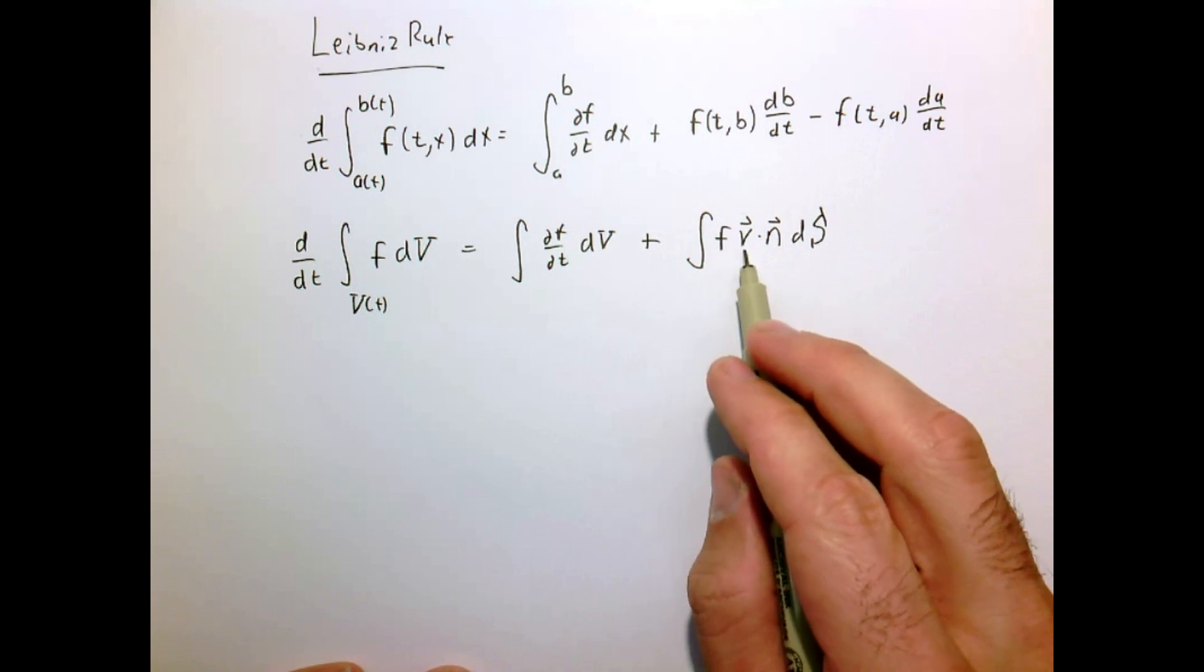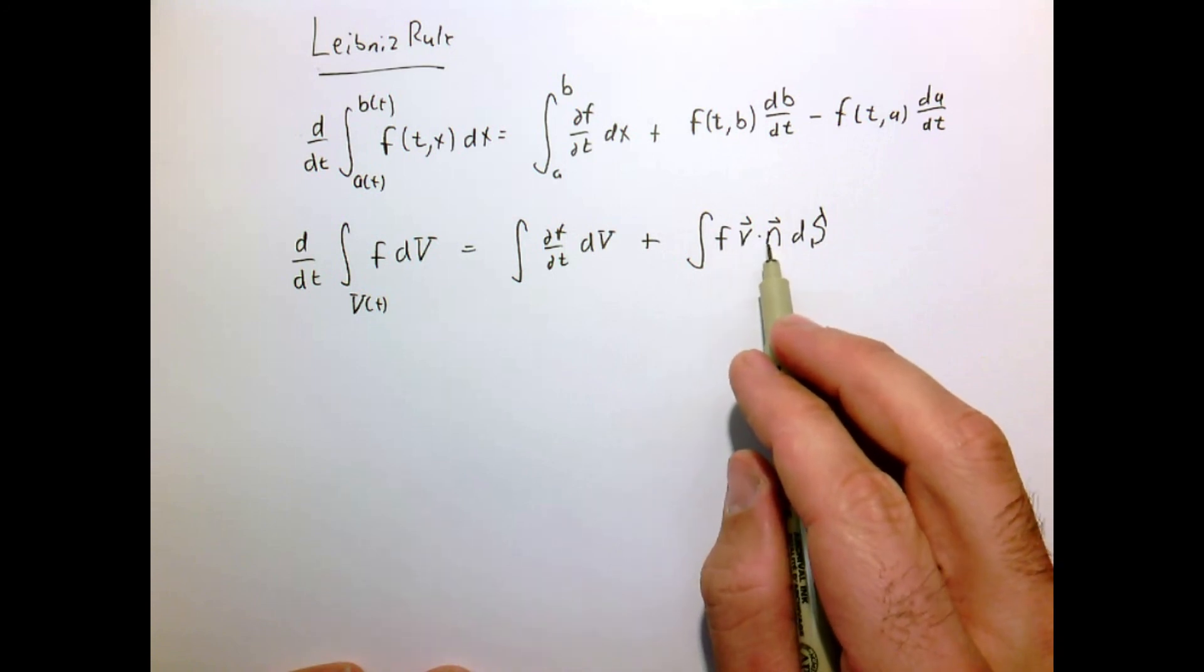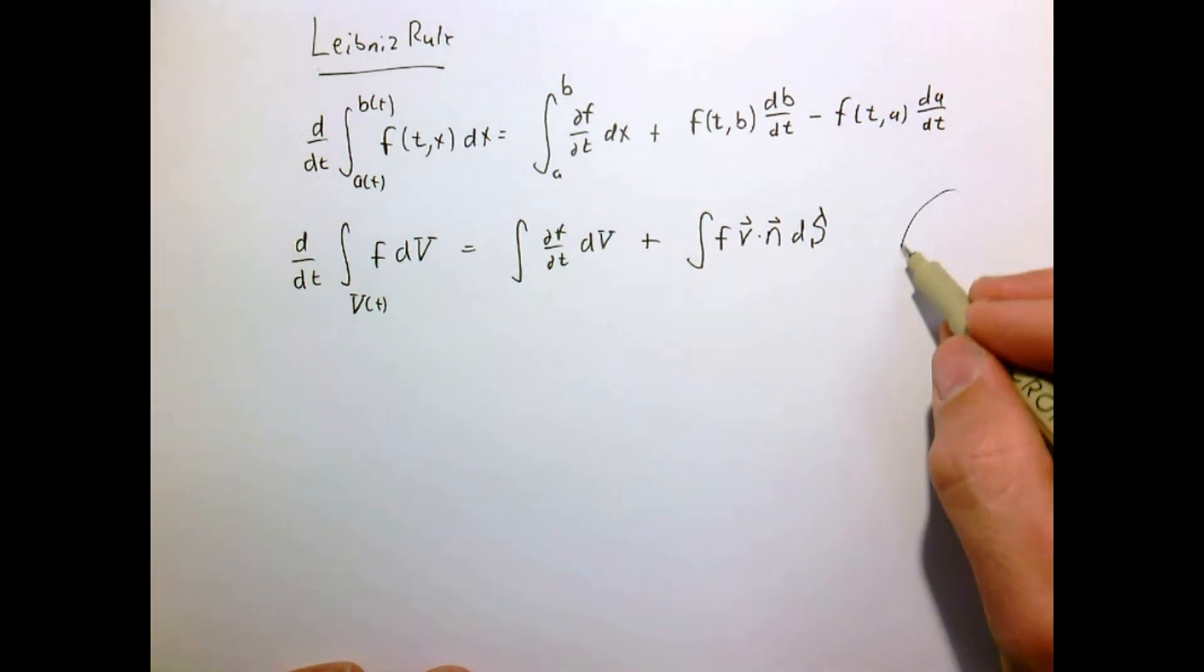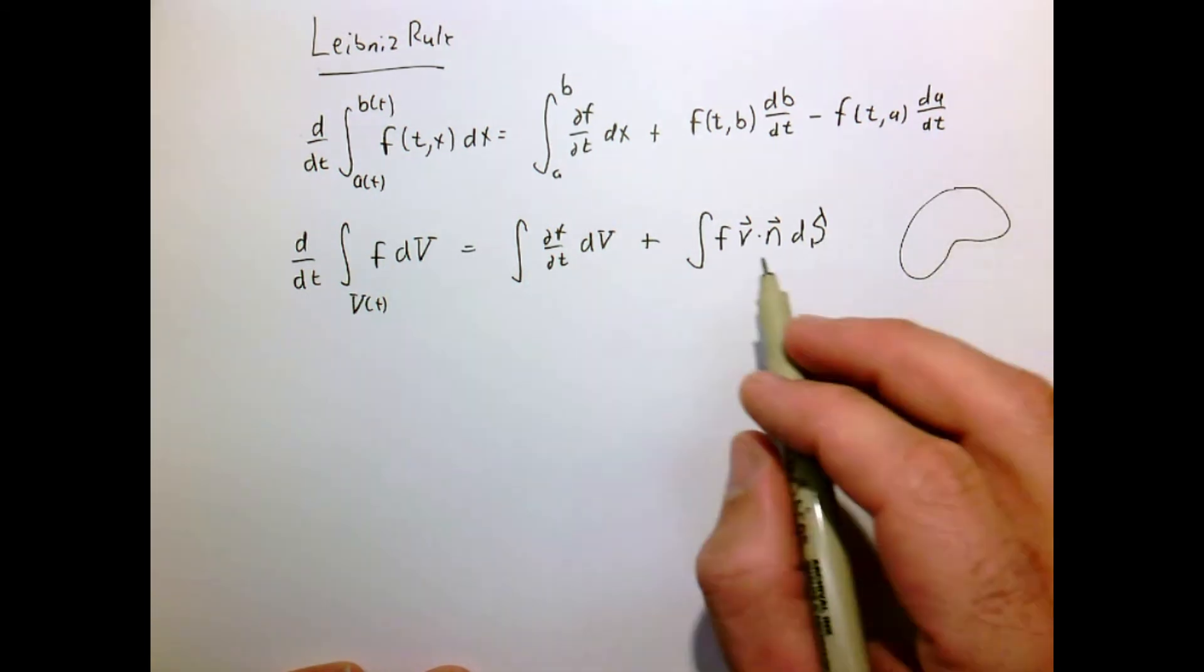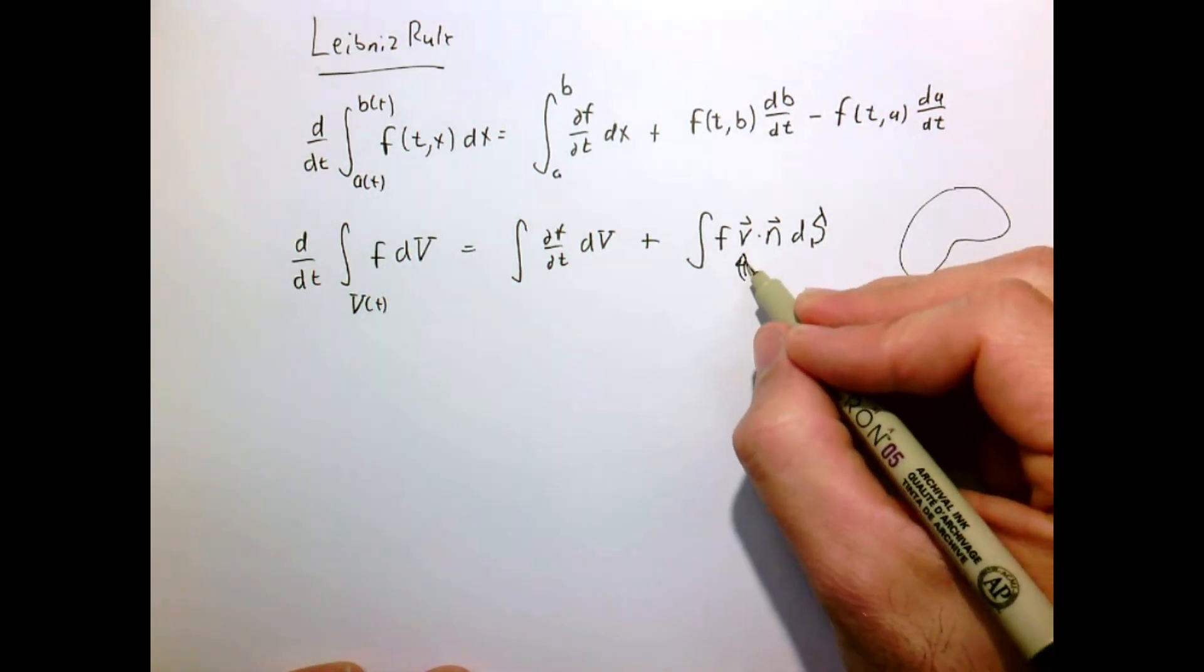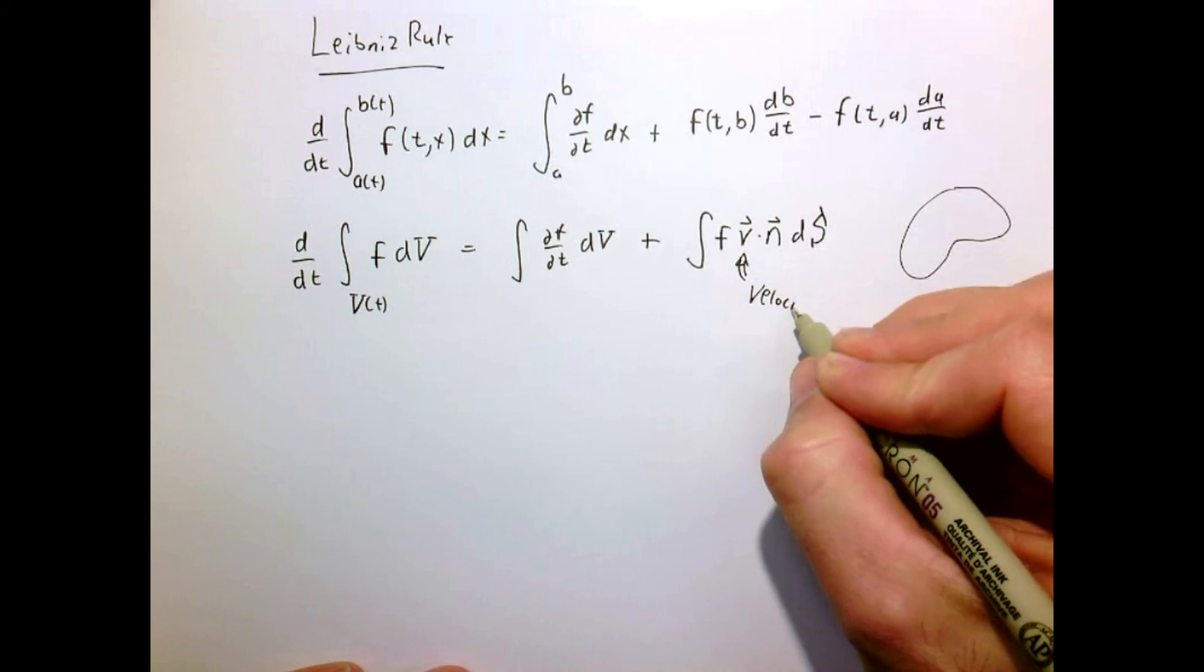We have f times some velocity dotted with the normal vector of the surface integrated around our arbitrary region. And this velocity here we interpret as the velocity of the surface.